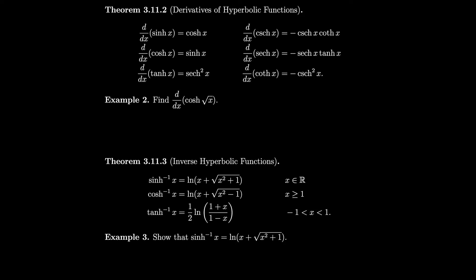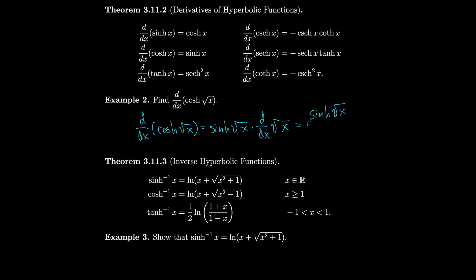Let's do an example. If we want the derivative of cosh(√x), we'll compute d/dx of cosh(√x). That equals sinh(√x) times the derivative of what's inside by the chain rule. The derivative of √x gives us sinh(√x) / (2√x).